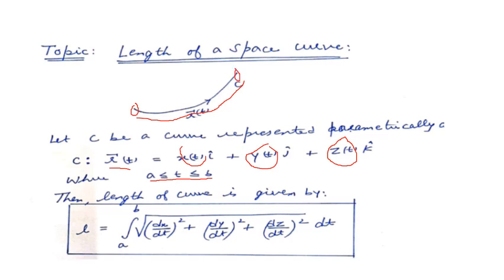The formula used to calculate the length of the curve is: integral from a to b of the square root of (dx/dt)² + (dy/dt)² + (dz/dt)², integrated with respect to t. So we identify x, y, and z, take the derivatives with respect to t, square them, take the square root, and then integrate.